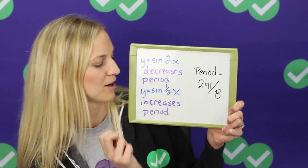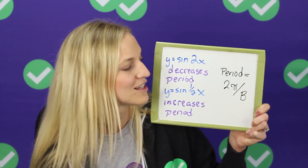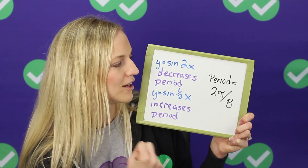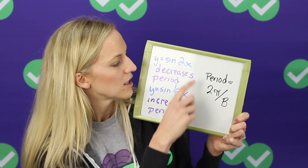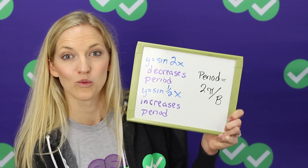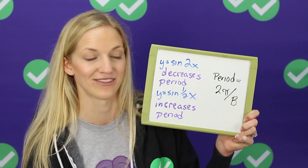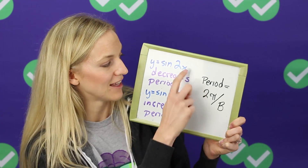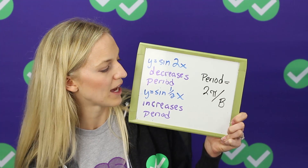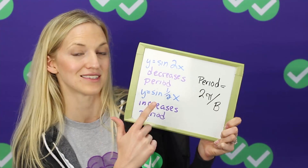Now let's talk about period, which is the other big transformation you need to know for the ACT. This is what happens when we put a number in front of the X. The implied number would always be 1 if it was just sine of X. If you remember the equation for these waves, this is B, and our period is 2π over B. If there's nothing there, it's really an implicit 1, so the period would be 2π over 1. Sine and cosine have a period of 2π if it's just sine of X or cosine of X. So if it's Y equals sine of 2X, we put 2 in for B, and our period would be π — it decreases the period.